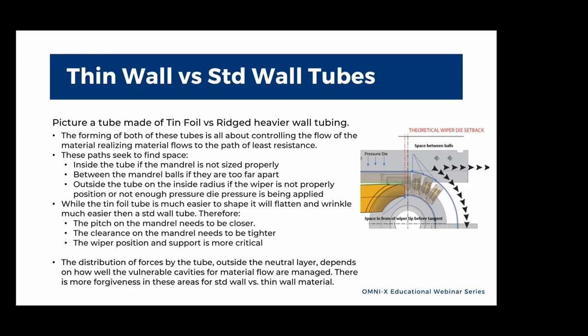Picture a tube made of tin foil versus rigid heavier wall tubing. The forming of both of these tubes is all about controlling the flow of the material, realizing material flows to the path of least resistance. These paths seek to find space — it can be inside the tube if the mandrel is not sized properly, between the mandrel balls if they are too far apart, and outside the tube on the inside radius if the wiper is not properly positioned or not enough pressure die force is being applied.